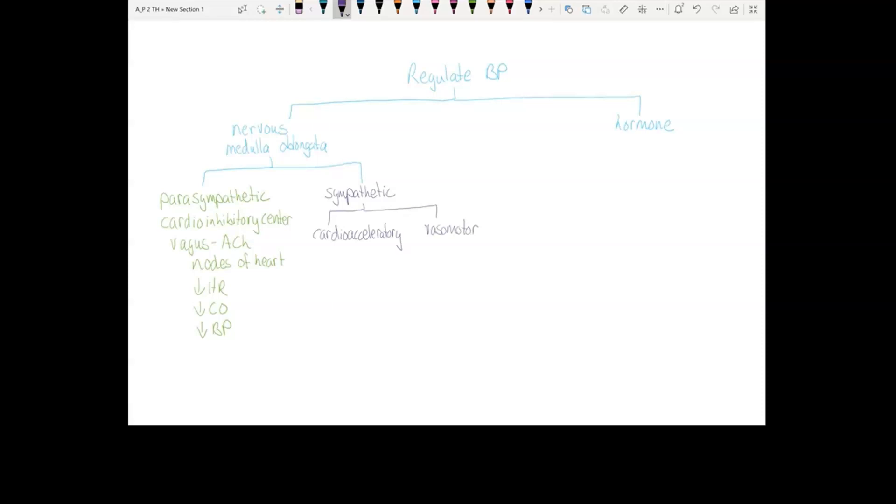The cardioacceleratory center sends norepinephrine to two parts of the heart, the nodes and the myocardium. When you put norepinephrine on the nodes, you increase heart rate. This increases cardiac output, which increases blood pressure. When you put norepinephrine on the myocardium, you increase stroke volume, which increases cardiac output, which increases blood pressure.